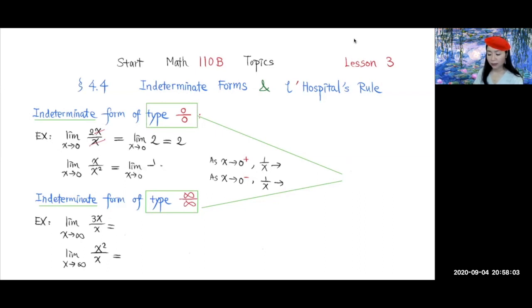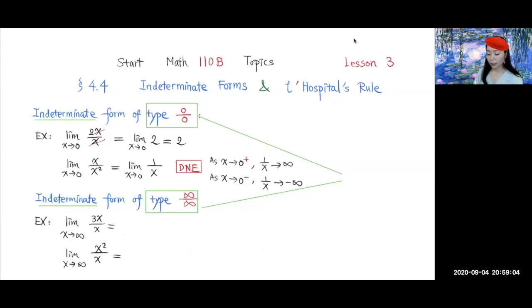Now take a look at this second limit over here. Again, this is of type 0 over 0 — as x goes to 0, the numerator and denominator both go to 0. If we simplify this function and divide by x up and down, that gives us 1 over x. So the limit here does not exist. As x approaches 0 from the positive side, 1 over x goes to positive infinity; if x goes to 0 from the negative side, 1 over x goes to negative infinity. So the limit does not exist.